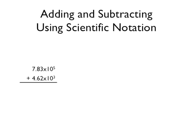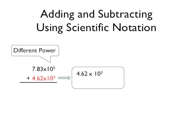Let's do another example by adding 7.83 times 10 to the 5th plus 4.62 times 10 to the 3rd. They don't have the same power of 10. You can change 10 to the 3rd into a 10 to the 5th by multiplying by 100.